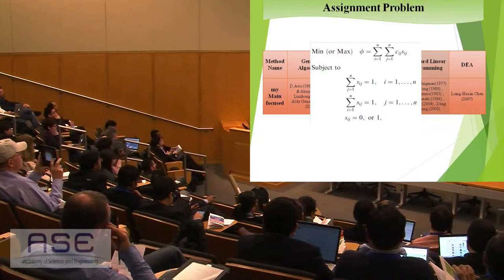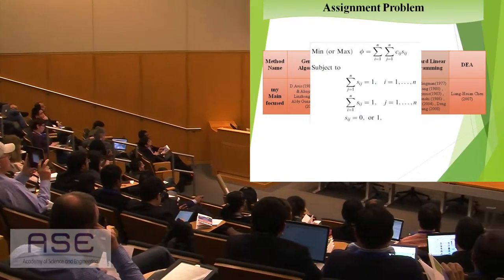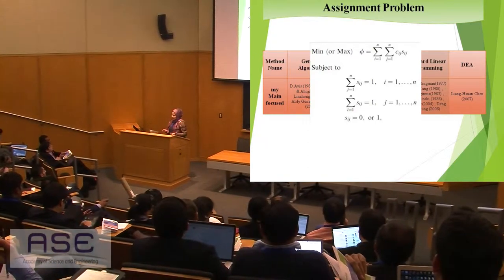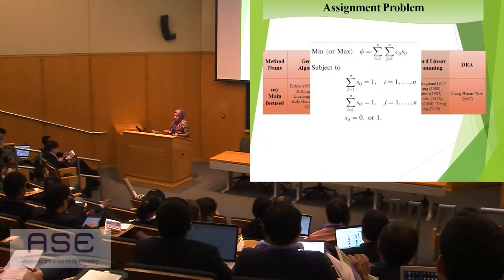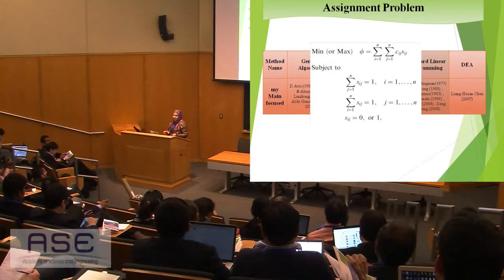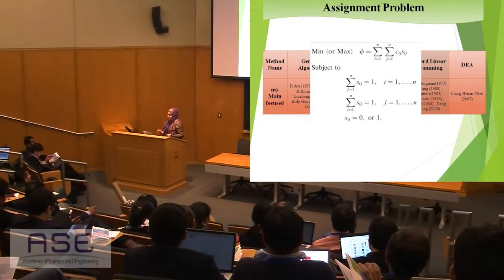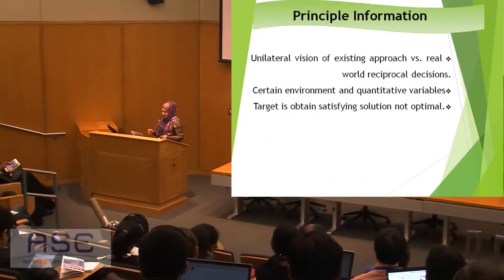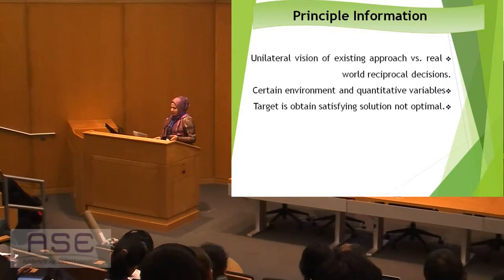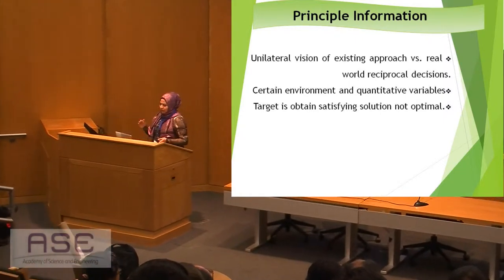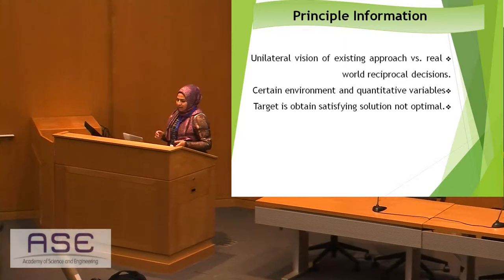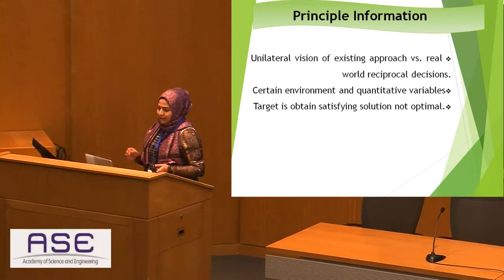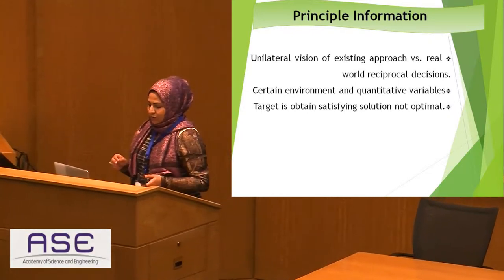All the methods that have already been employed in multi-criteria decision-making systems follow a unilateral procedure. In other words, they assume only one role for each of both sides of a decision. It means the decision-making side is called the decision-maker, and the other side is only assumed as an alternative, which is only judged.